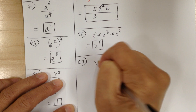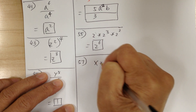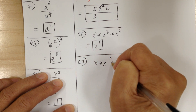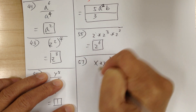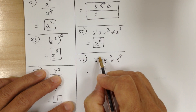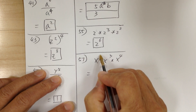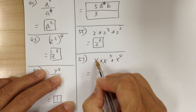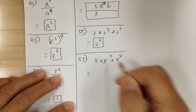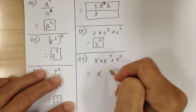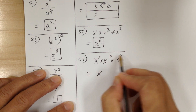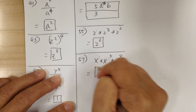Number 57, you got x times x to the 3 times x to the 4. Don't forget — when you don't see a number, the exponent is 1. So it would be x to the 8: 1 plus 3 is 4, plus 4 gives you 8.